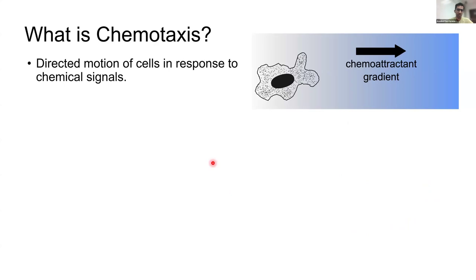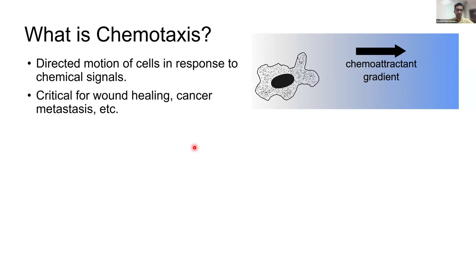I'll start by introducing what chemotaxis is. It is the directed motion of cells in response to chemical signals. Many kinds of cells exhibit chemotaxis. Here, we are studying chemotaxis by eukaryotic cells. This is a simple diagram showing the direction of motion in which a eukaryotic cell would be moving. Generally, there are chemoattractants — chemicals that the cell is attracted to — and cells move along the gradient of the chemoattractant.